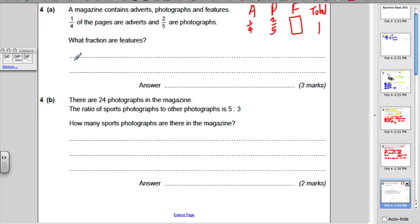So, what fraction are features? Well, what we have to do is, we have to firstly add up a quarter plus two-fifths. If adding or subtracting fractions is your aim, make the denominators the same, make them over 20. So, I'd have to multiply top and bottom by 5, so it'd be 5 over 20. I'd have to multiply top and bottom by 4, so it'd be 8 over 20. That would be 13 over 20, are either adverts or photographs. Therefore, what must be left are features. So, 1 subtract 13 over 20, which is 7 over 20, are features. So, the answer for this is simply 7 over 20.